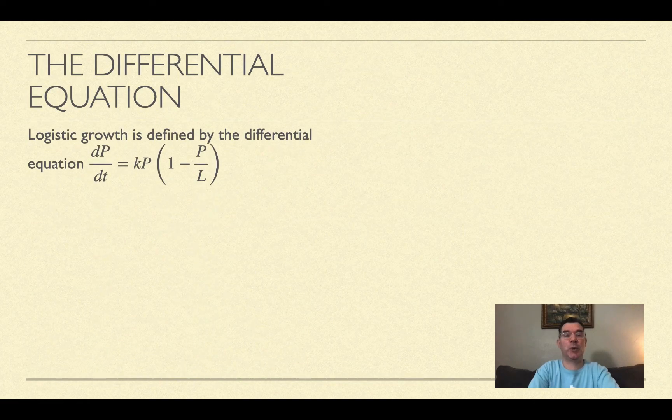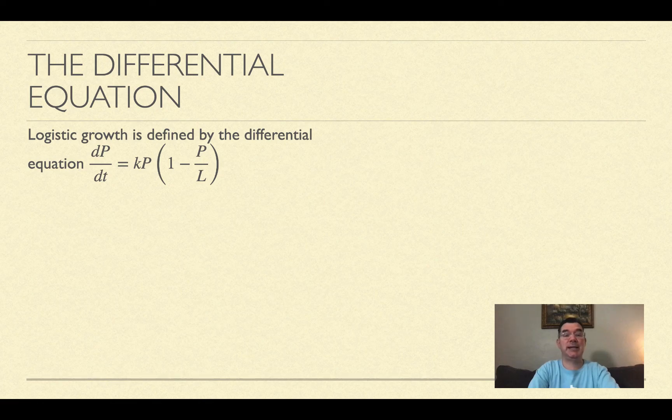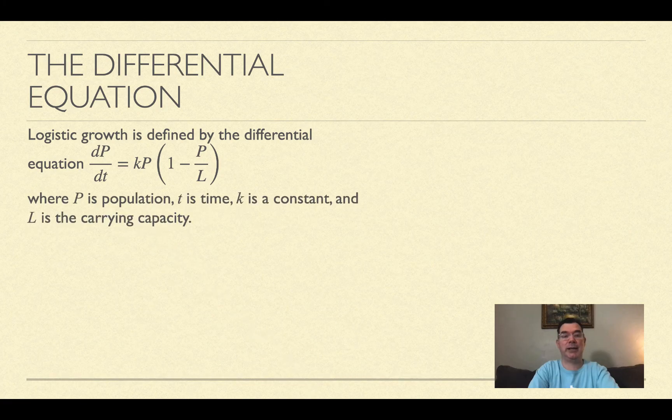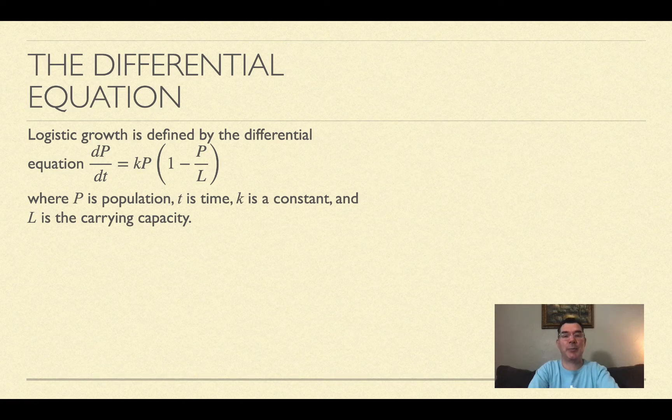Here's the logistic equation. It is dP/dt, where P is population and t is time, equals kP times (1 - P/L). L is the carrying capacity, the maximum population allowed by a certain environment.